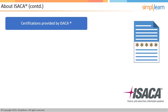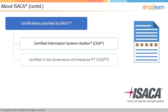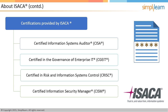Members of ISACA get subsidized rates in pursuing their certifications, which include Certified Information Systems Auditor or CISA, Certified in the Governance of Enterprise IT or CGEIT, Certified in Risk and Information Systems Control or CRISC, and Certified Information Security Manager or CISM. Let's look at the content coverage in the CRISC examination and learn about the CRISC domains in this context.